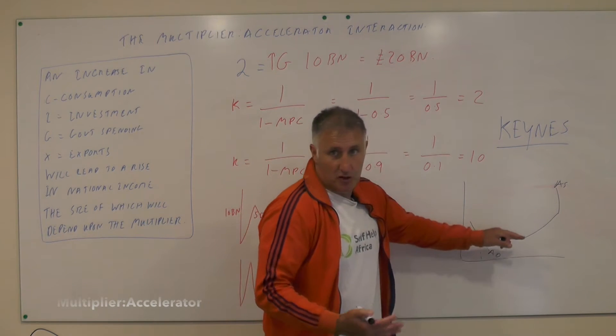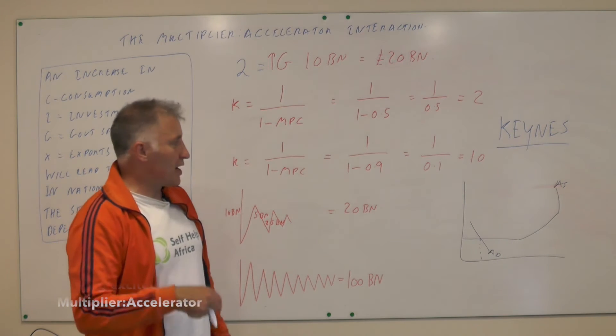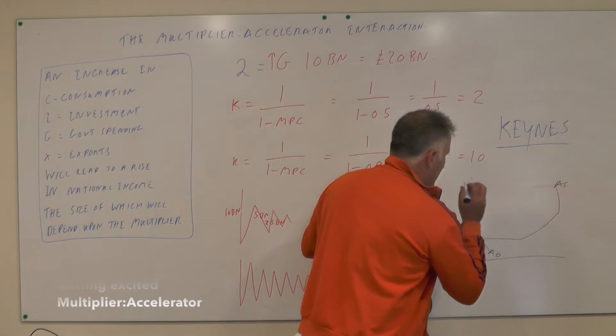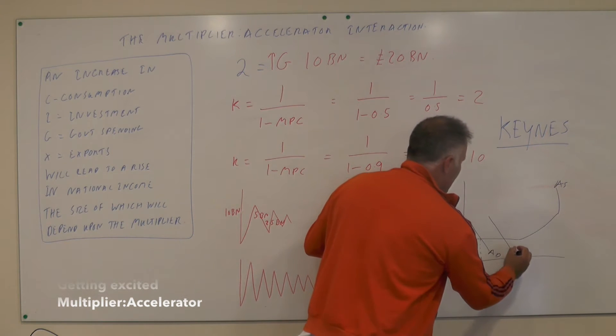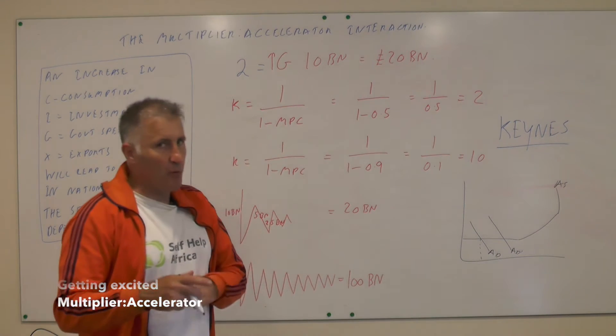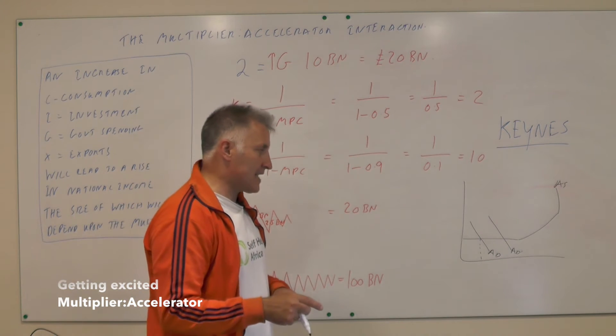Maybe this happened in the 1930s, we had really low AD but we could produce many more goods. So what Keynes said in this situation is we should be increasing government spending, and then quite clearly that would lead to an increase in AD.